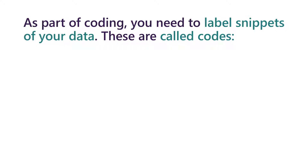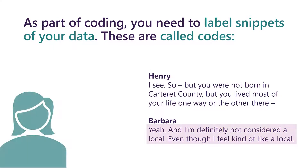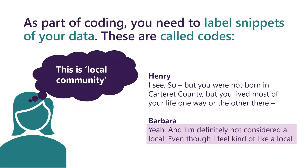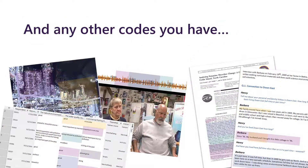As part of coding, you need to label snippets of your data. These snippets are called codes. So, if we take an example from Barbara's interview, it is a case of you as a researcher looking at some of that text and thinking how you are going to label it. With NVivo, we can look at one idea such as 'local community' and see where it occurs in different files, coding across images, video, textual files and data sets. You continue to do this for any of the codes that you have, layering up your data with rich levels of information.